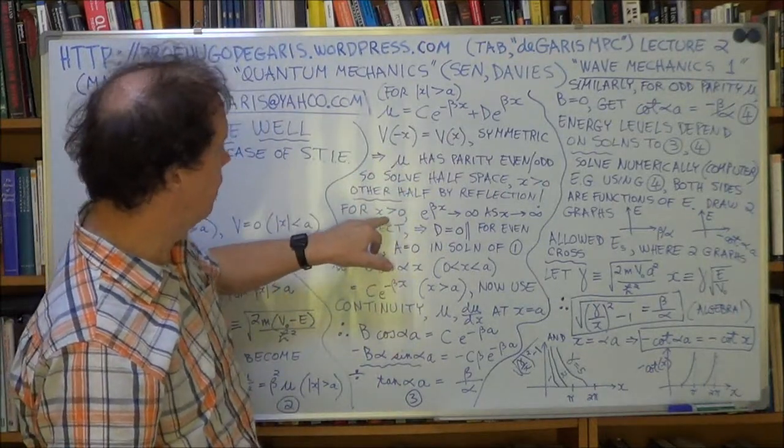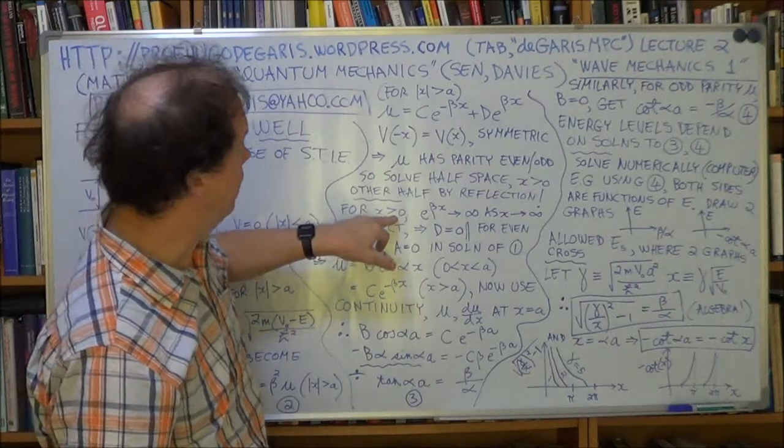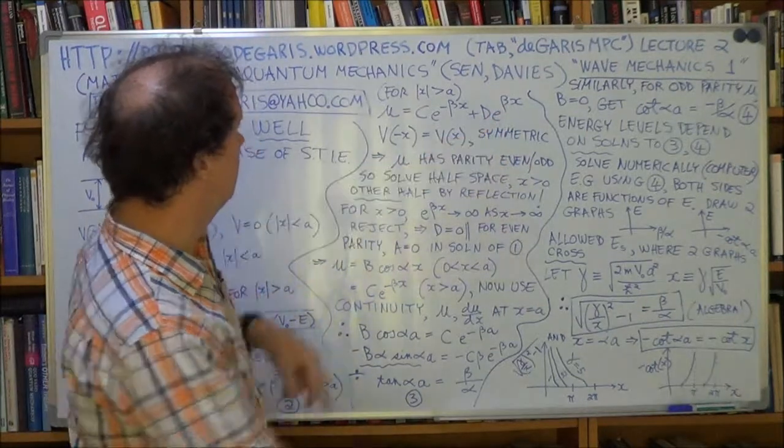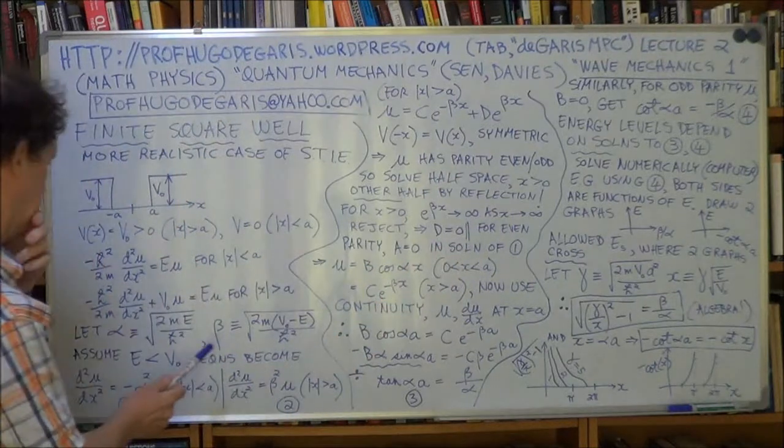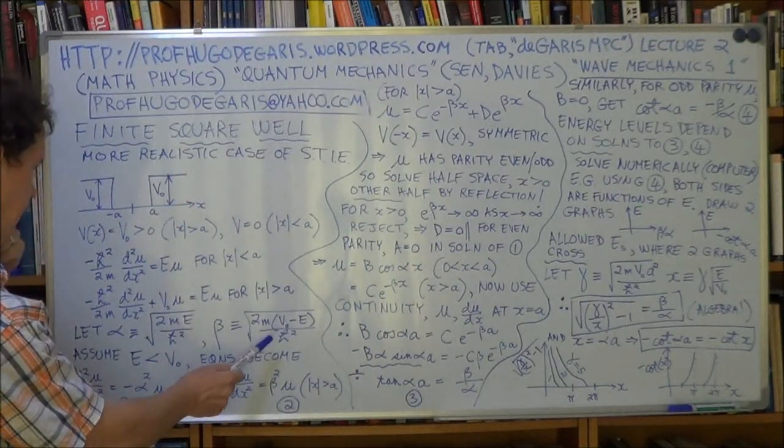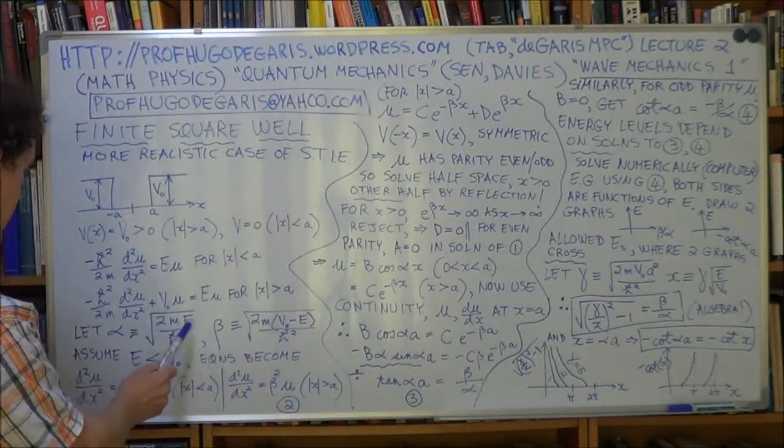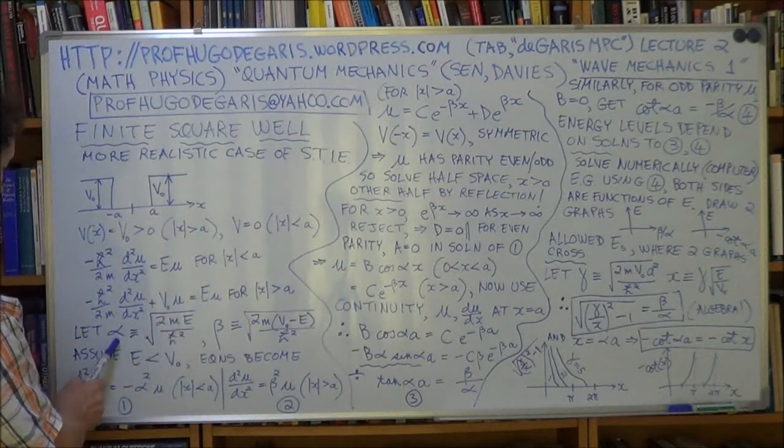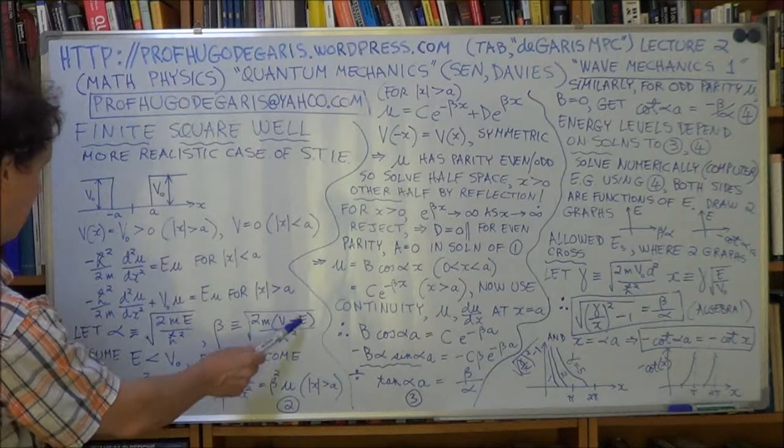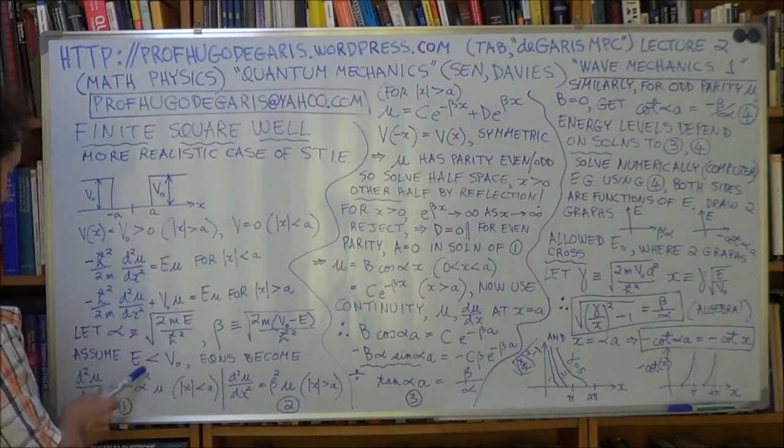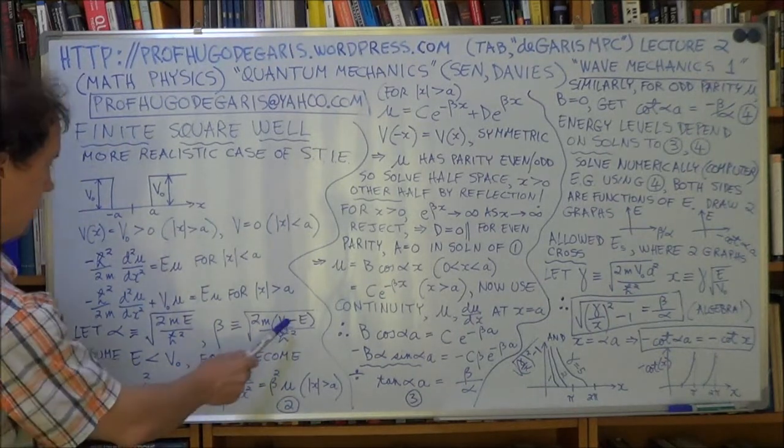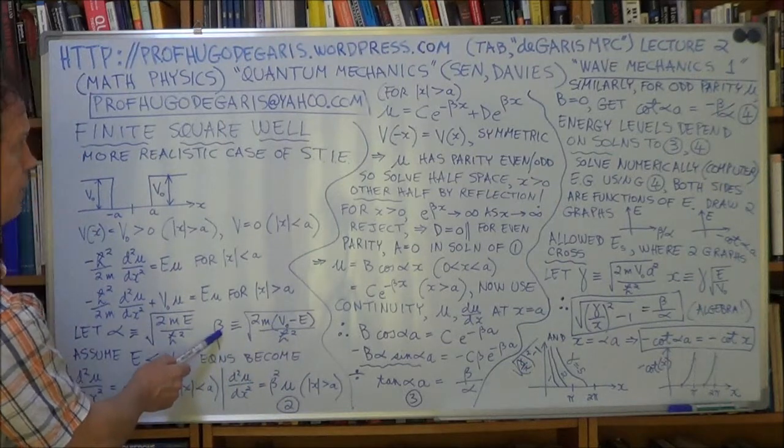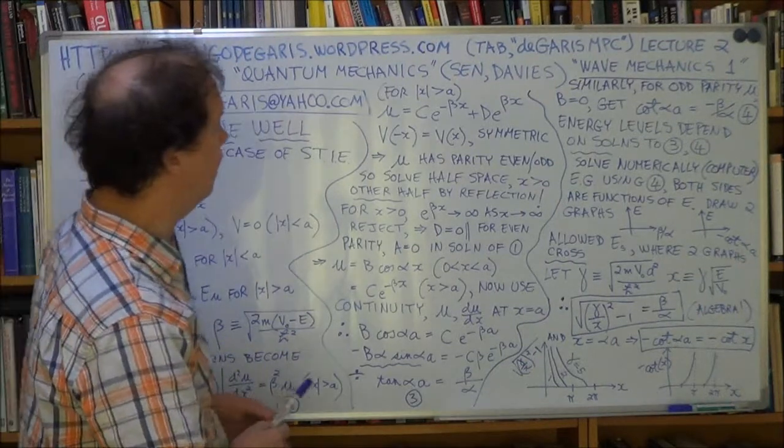For x greater than 0, here's our general solution. Now, if x is positive on the right-hand side there, let's assume alpha and beta are positive. Let's assume our energy is positive, so alpha would be positive. Now, we're assuming E is less than V, for this part of the problem. So that makes beta positive. So alpha and beta are positive.